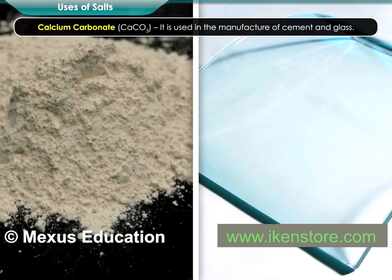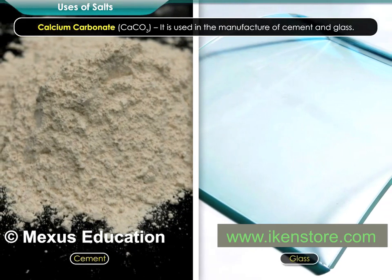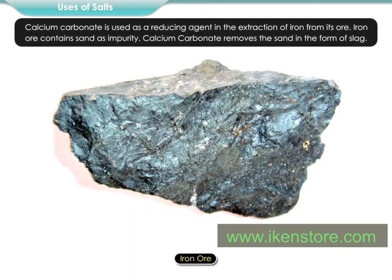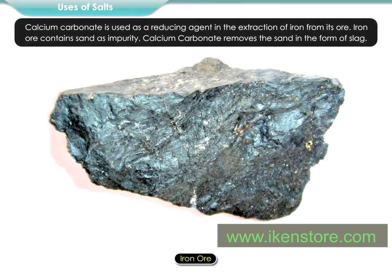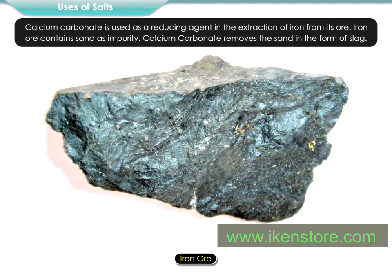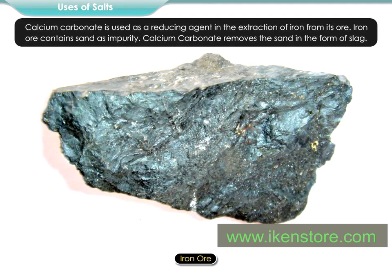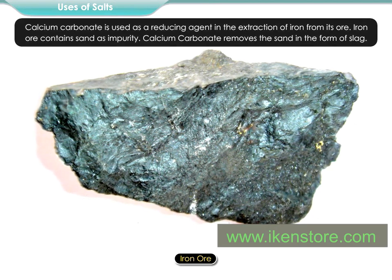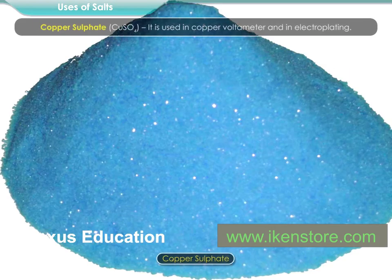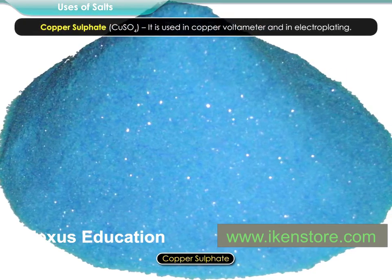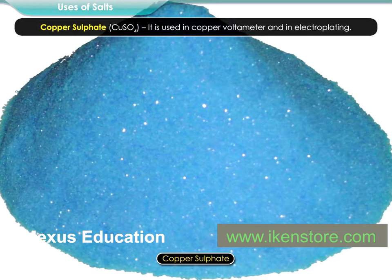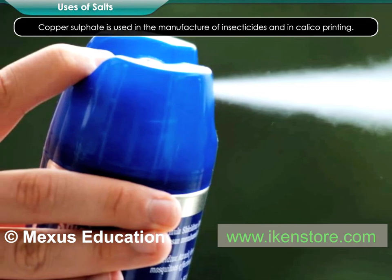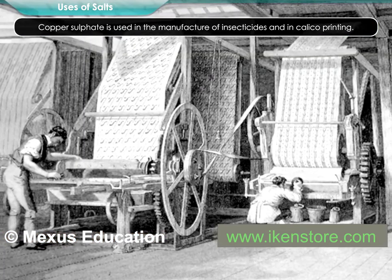Calcium carbonate is used in the manufacture of cement and glass. It is also used as a reducing agent in the extraction of iron from its ore. Iron ore contains sand as an impurity, and calcium carbonate removes the sand in the form of slag. Copper sulphate is used in copper voltameters, electroplating, the manufacture of insecticides, and in calico printing.